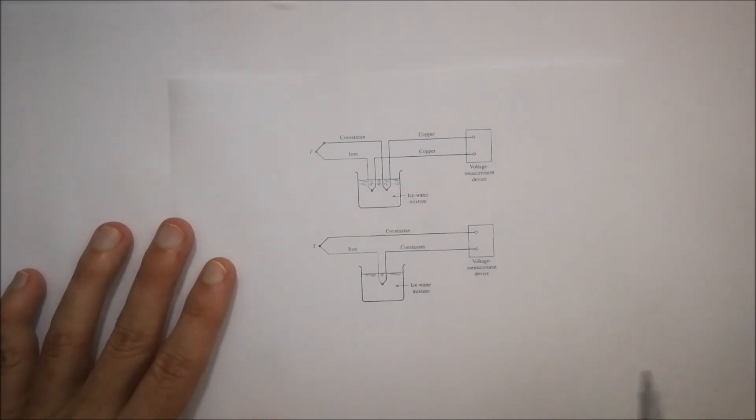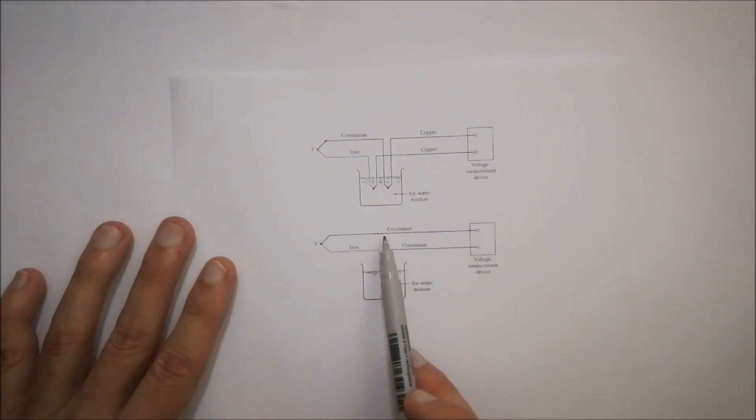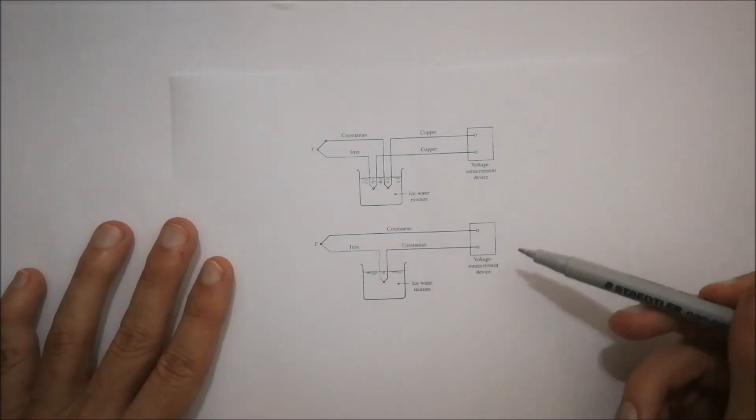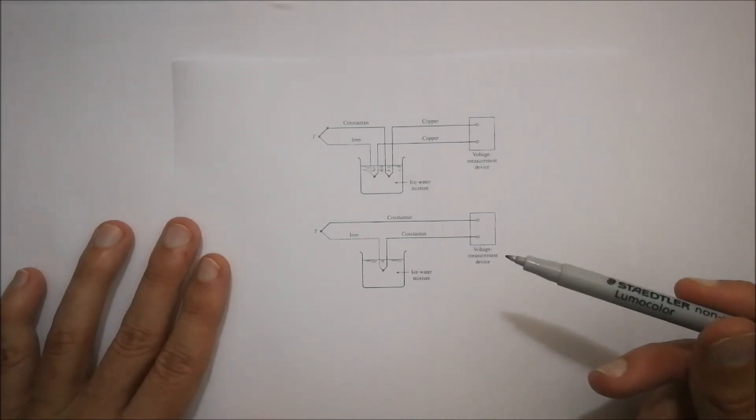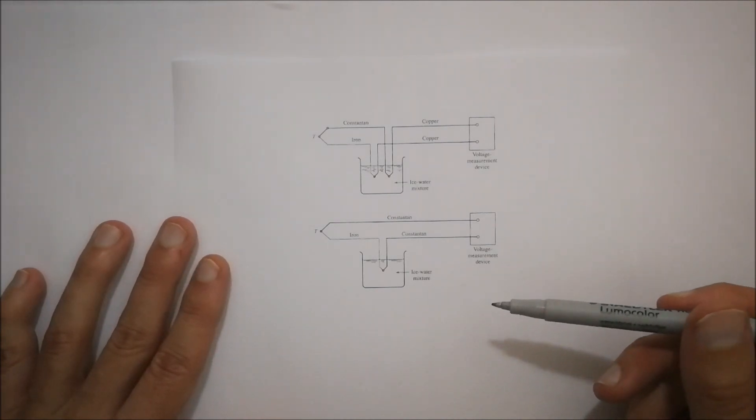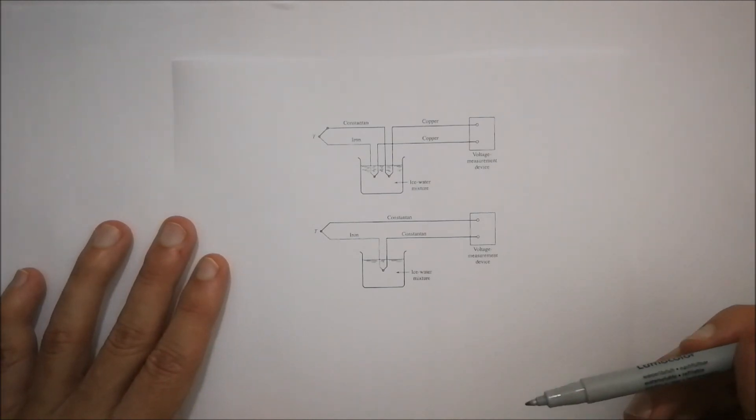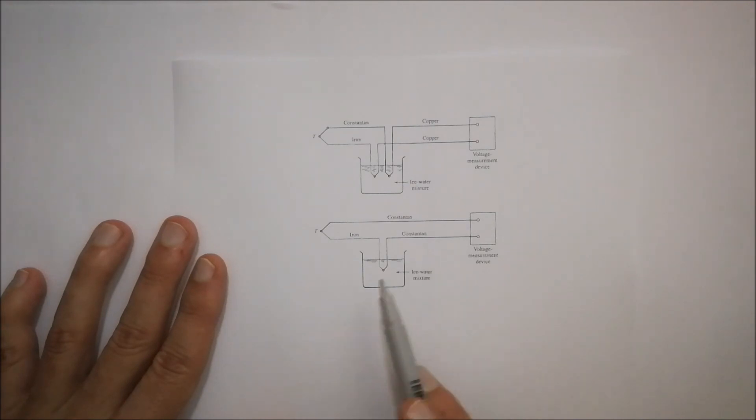The other configuration is where you've got the one wire that's Constantin. It goes up to the point where it measures the temperature. You've got an iron linked up to that coming down into your ice water mixture, which is joined to another wire of Constantin, going to where you're going to measure the voltage for the specific device.